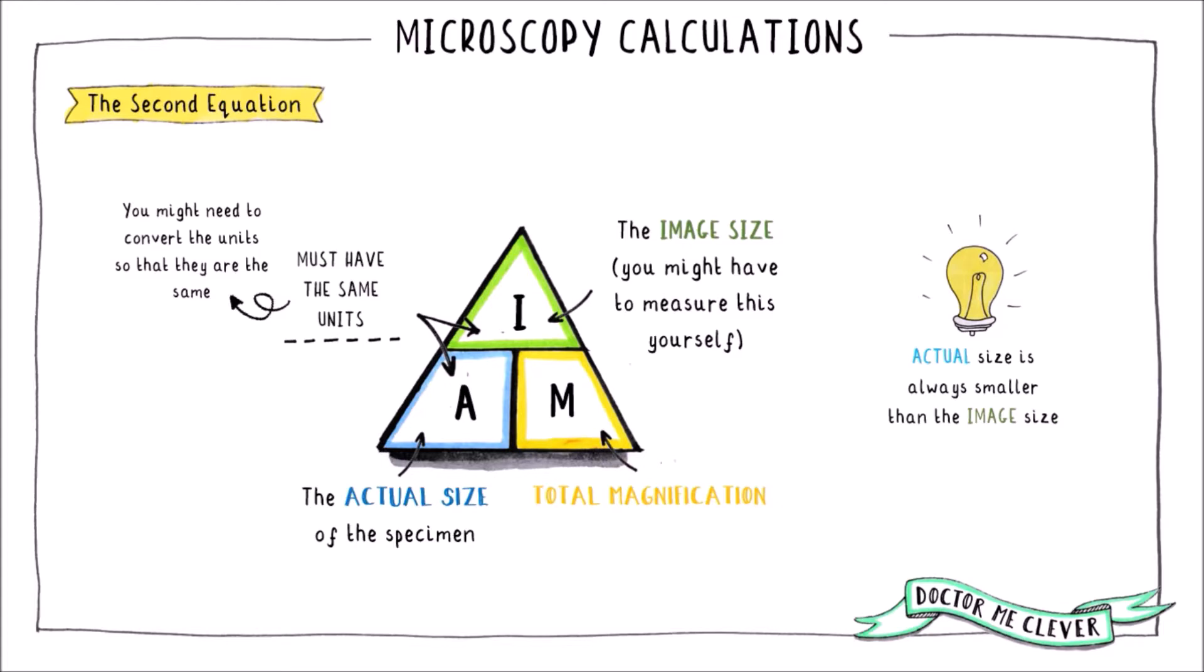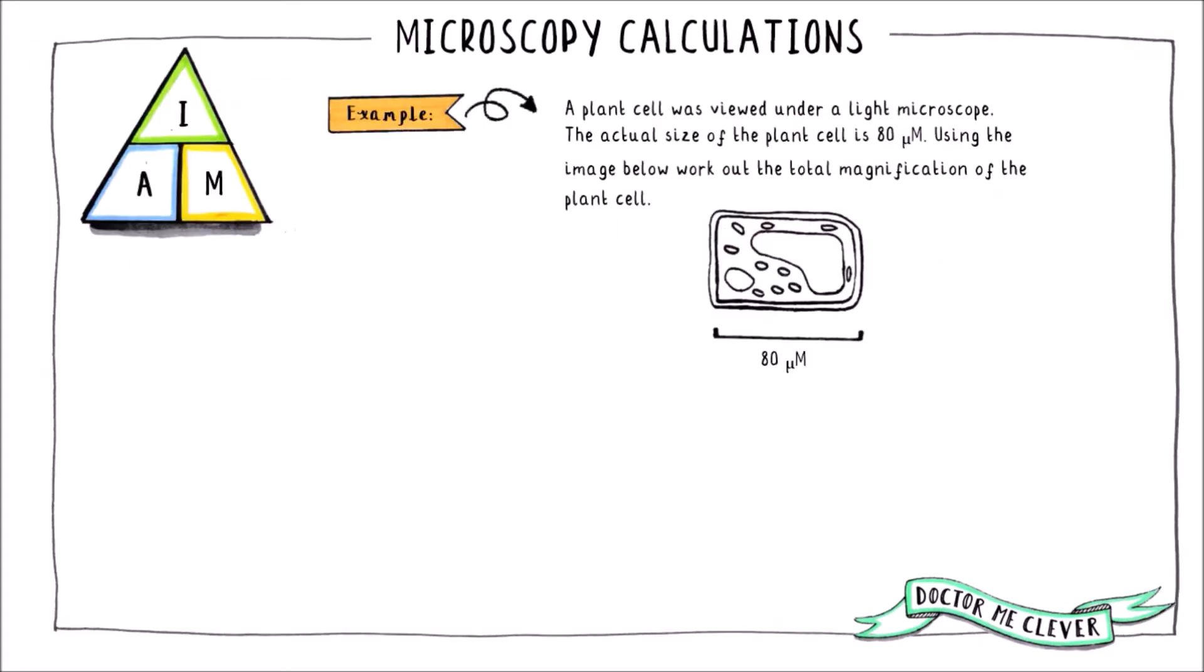Let's look at an example of how to use this equation. The plant cell was viewed down a light microscope. The actual size of the plant cell is 80 micrometers but that is all the information that we have being given in the text. We know that to work out the total magnification we also need the image size so we will need to measure this ourselves.